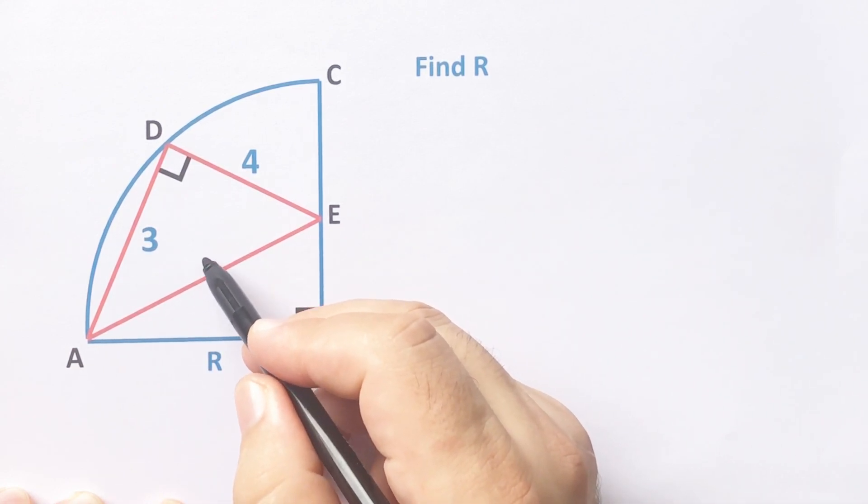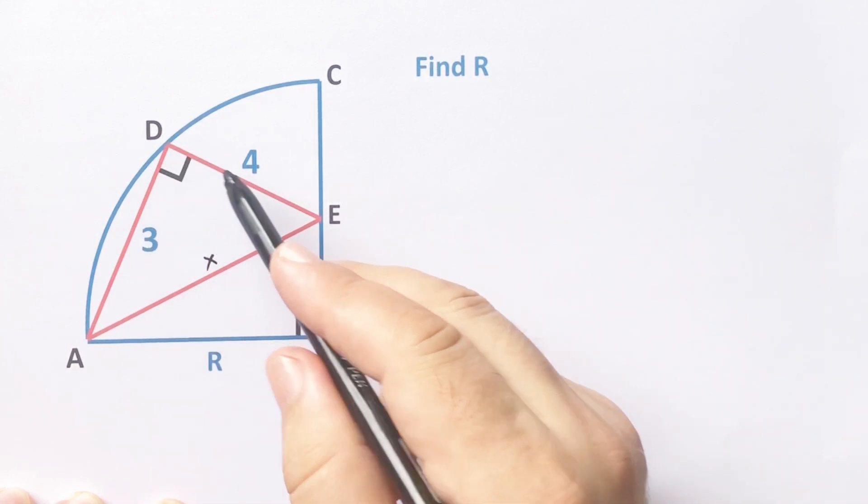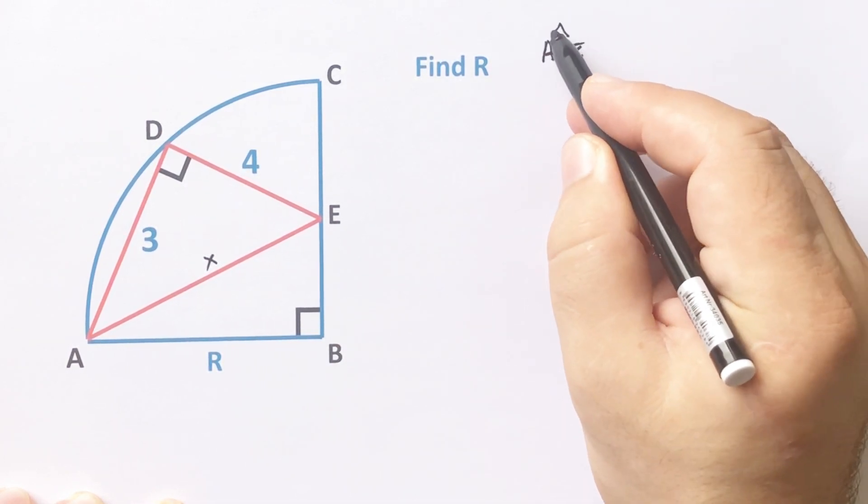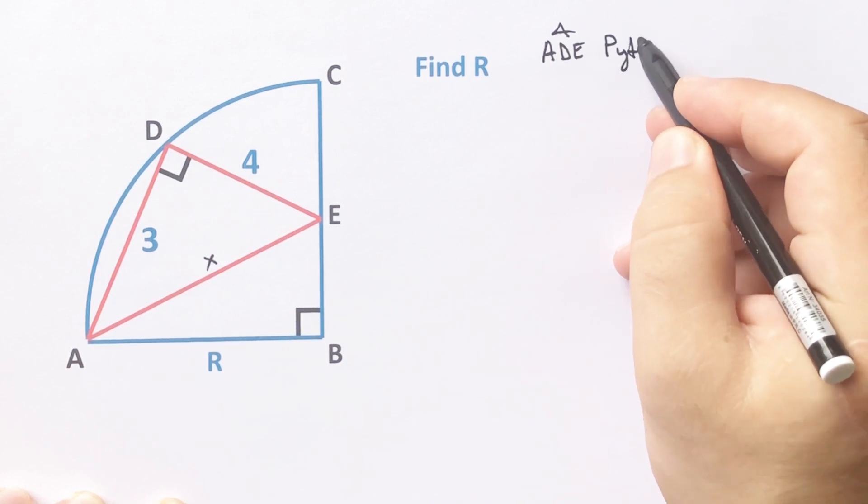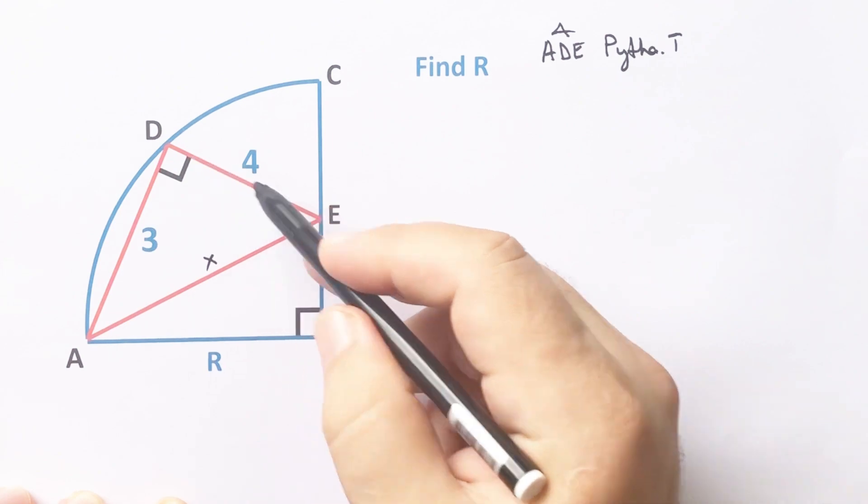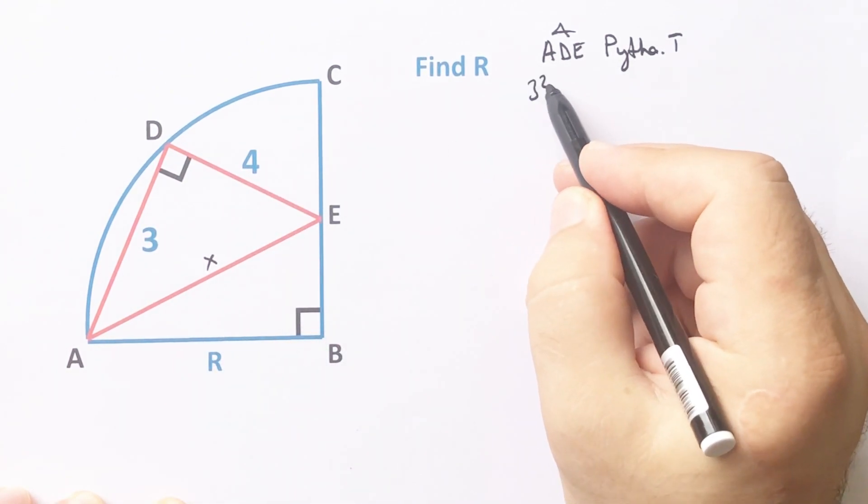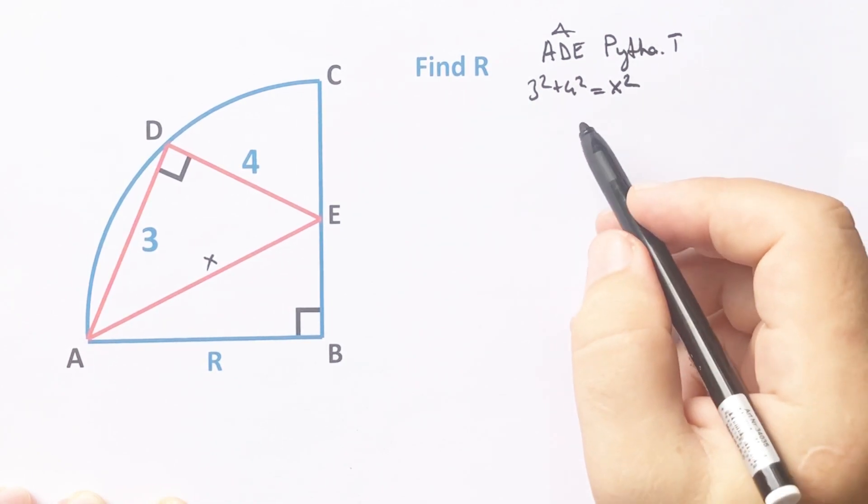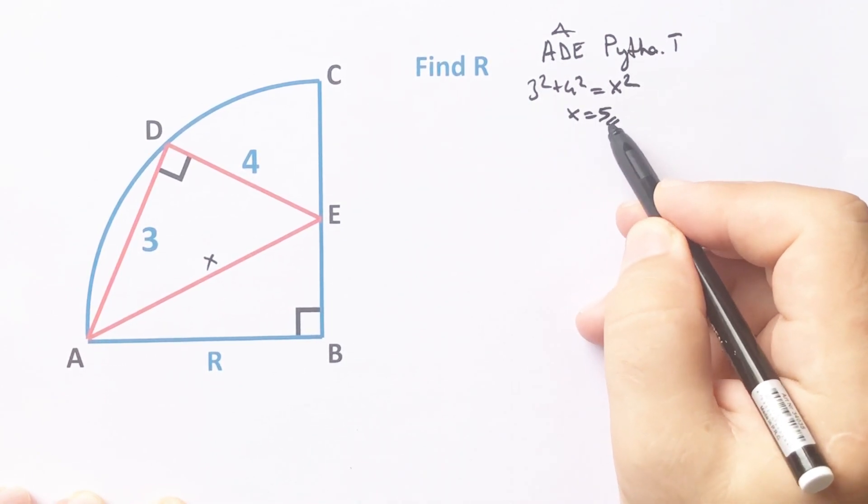If we apply Pythagorean theorem for this triangle, we get to the x. Therefore, 3 squared plus 4 squared equals x squared, so x equals 5.